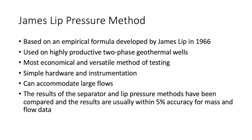The James lip pressure method is used for highly productive two-phase geothermal wells. It is the most versatile and economical method of testing. However, it is not as accurate as a separator, but it is advantageous due to simple hardware and instrumentation and its ability to accommodate large flows for less money. When compared, the separator and lip pressure methods tend to vary in enthalpy and mass flow measurements by only about five percent, so there is not a huge difference between the two.